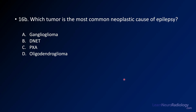Question two is: what's the most common neoplastic cause of epilepsy? Here you have some choices — ganglioglioma, DNAT, PXA, or oligodendroglioma. This is really a question about the frequency of these lesions and how often they cause epilepsy.